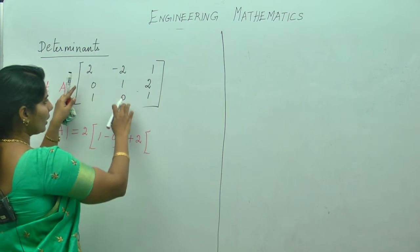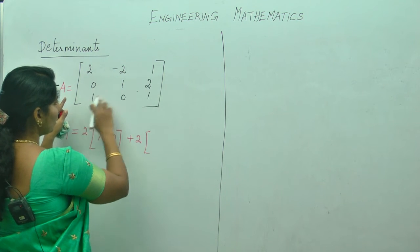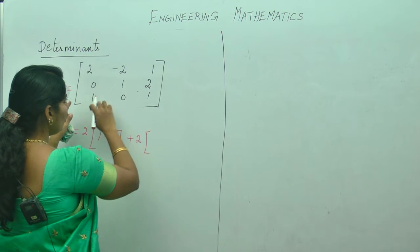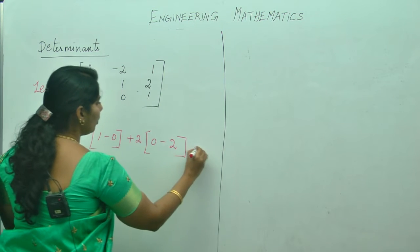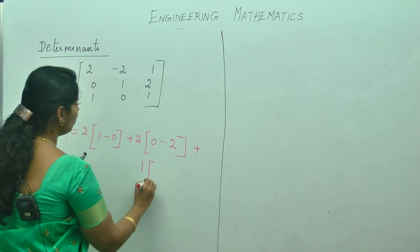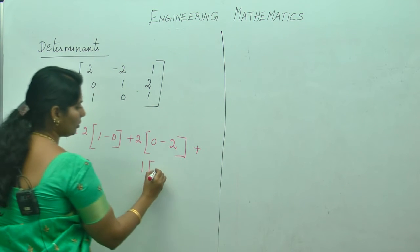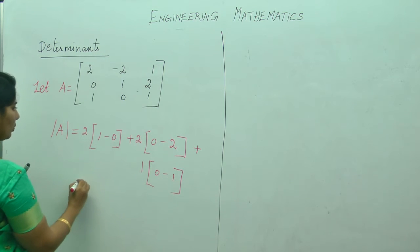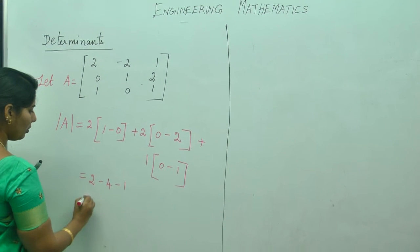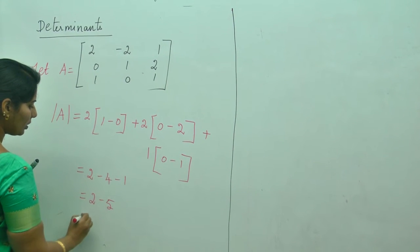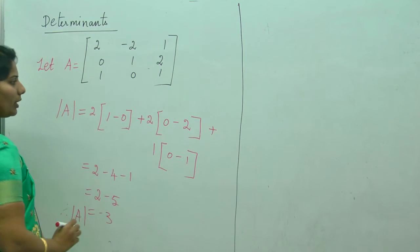Now plus 2 into — again you will leave the corresponding column and the row. What is left out? 0, 2, 1, 1. So 0 minus 2 = -2. Again for the last value, plus 1 into — you will leave the row and the column — which gives 0 minus 1. That equals 2 minus 4 minus 1, which is 2 minus 5, which equals minus 3.